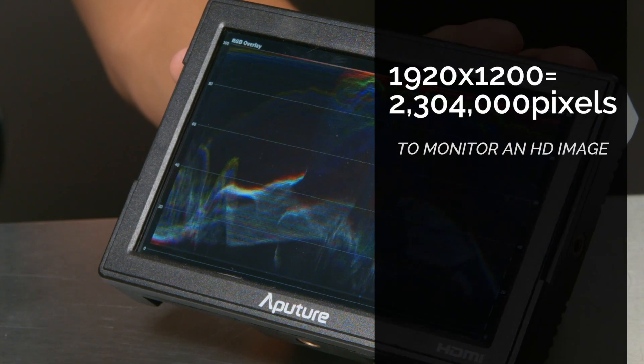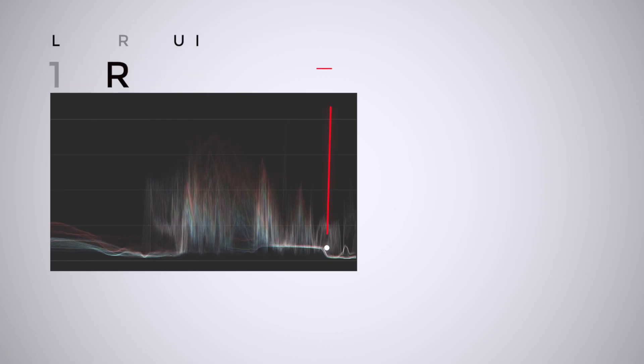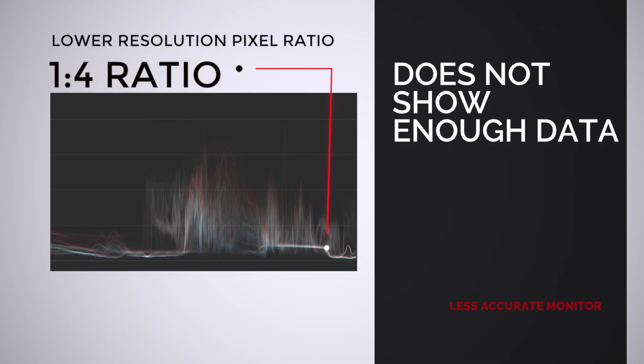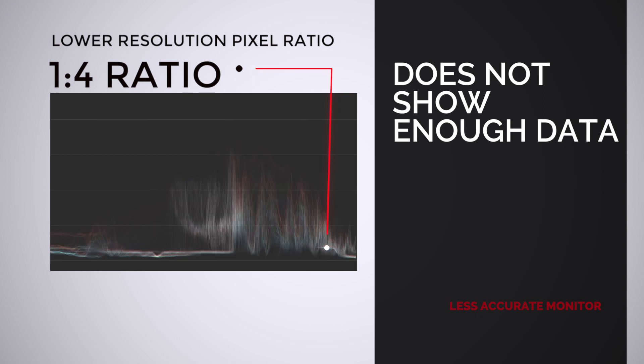The last thing to know about waveform is resolution. This will not be the same on every monitor — the resolution of your waveform ultimately depends on your manufacturer. Basically, waveform resolution is the number of pixels on your monitor that it will use to represent your image. A higher resolution is desirable because with more pixels, you're better able to more accurately see the data of your image represented on the waveform scope. For instance, if the waveform function is showing every four pixels in your image as one pixel on your scope, what would normally be four separate points will be represented as a single point on that graph.